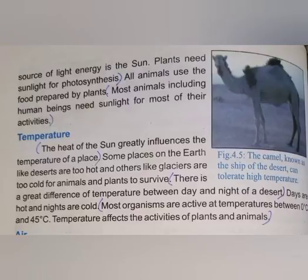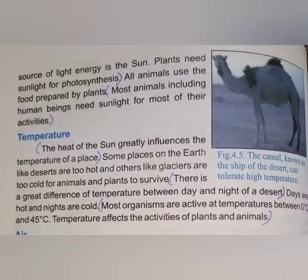Our next abiotic factor is temperature. The heat of the sun greatly influences the temperature of a place. Some places on the earth, like deserts, are too hot, and others, like glaciers, are too cold for animals and plants to survive. The sun's heat affects the temperature of our environment.